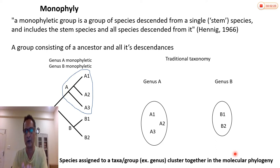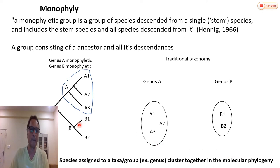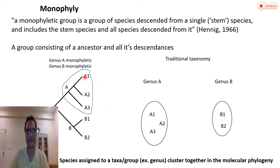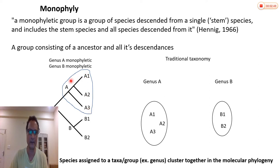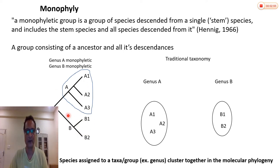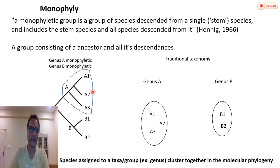When you have monophyly, they do agree with each other. You build the phylogeny of all these species using some genetic marker, and the phylogeny shows that species A1, A2, and A3 cluster together, and species B1 and B2 also cluster together. So the phylogeny agrees with the traditional taxonomy, and we say that genus A is monophyletic and genus B is also monophyletic.